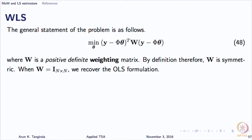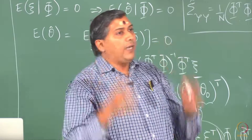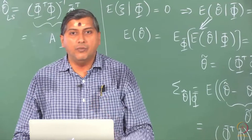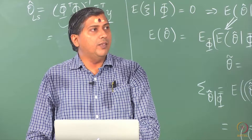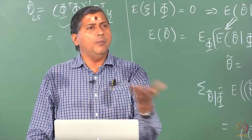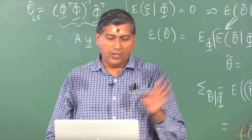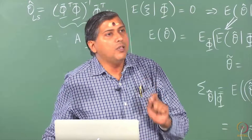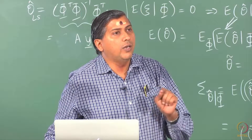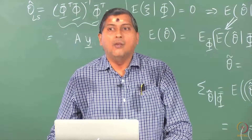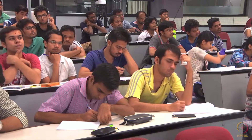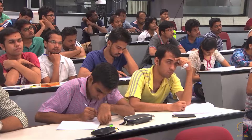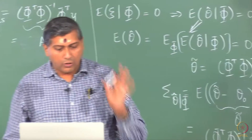The general case is when W is a full matrix. It cannot be any arbitrary full matrix — it has to be positive definite because we want the objective function to remain convex. When choosing weighting matrices, we have to choose positive definite matrices, ensured by choosing W to be symmetric. If in doubt, look at the eigenvalues of W; they should all be greater than zero. A full W is needed when errors are correlated. For heteroscedastic but uncorrelated errors, a diagonal W suffices. The choice of W we will discuss later.